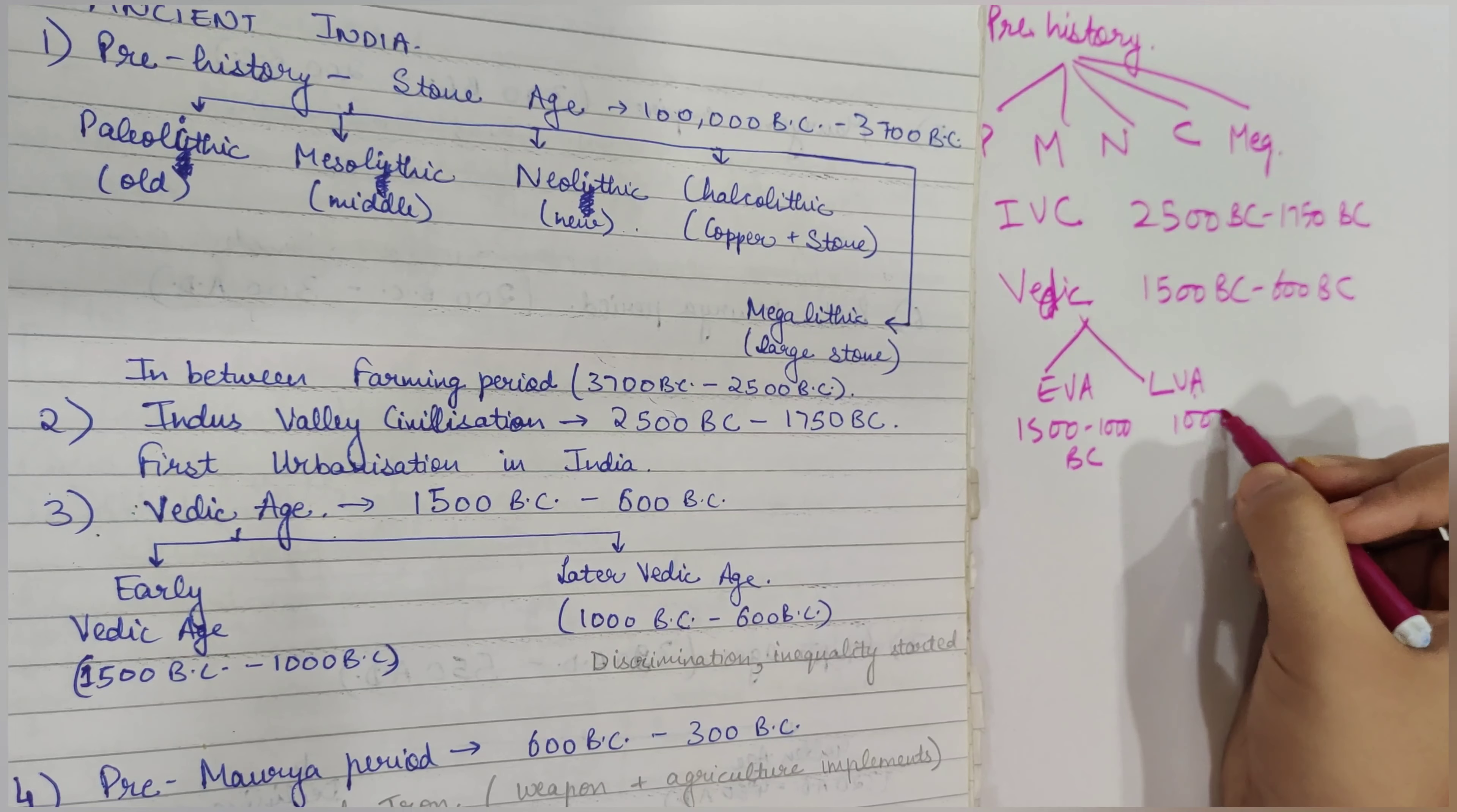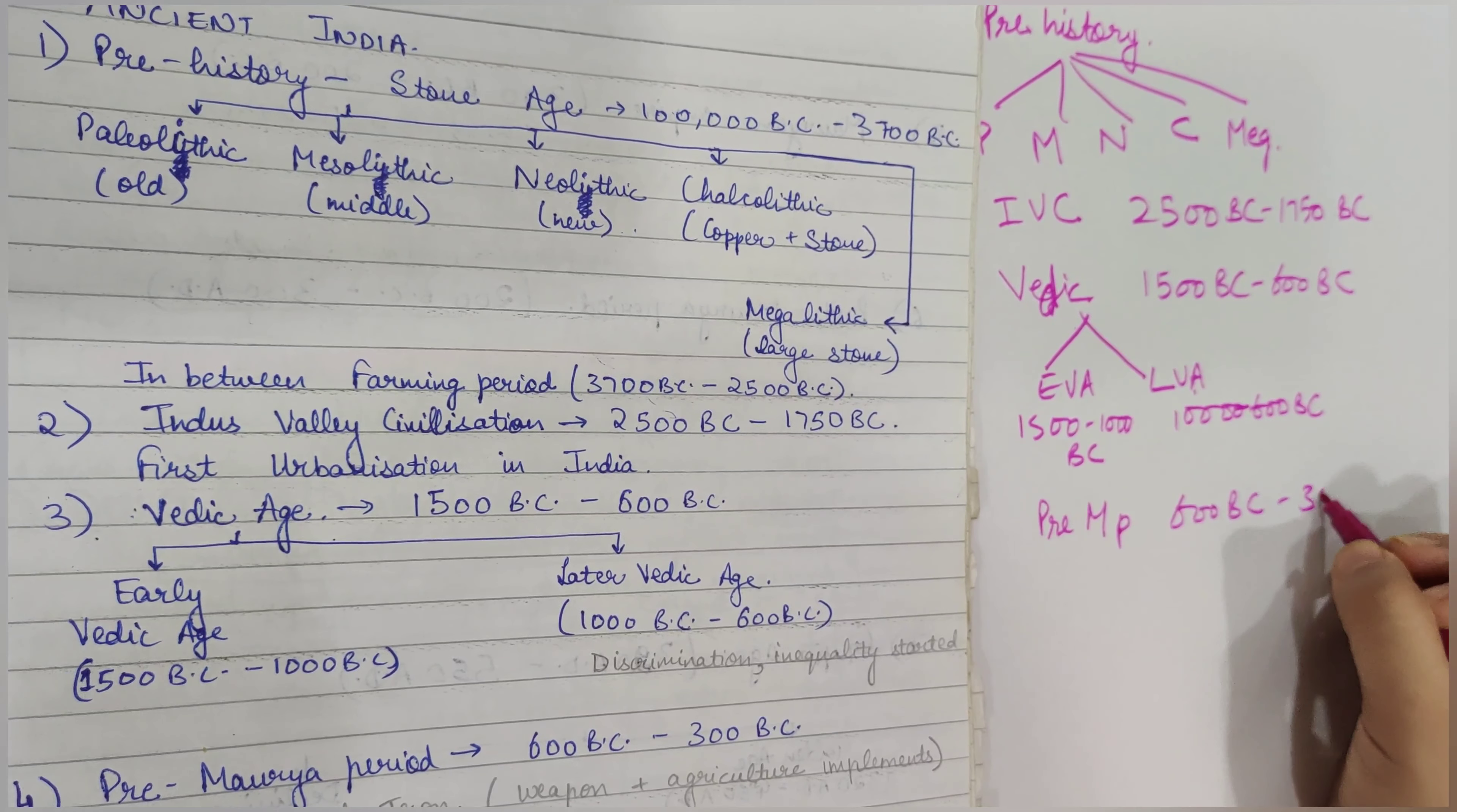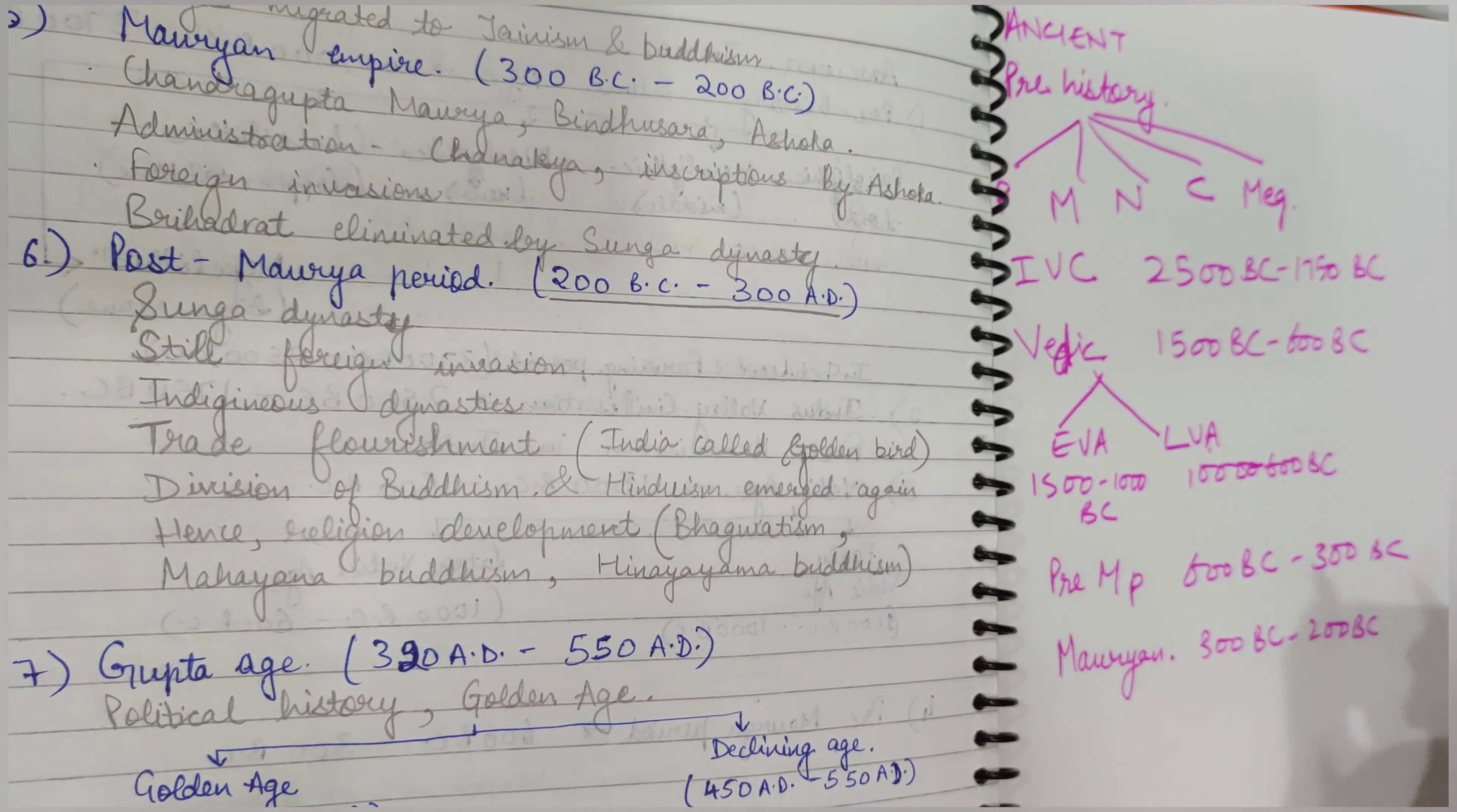After this comes the Pre-Maurya period, which lasts from 600 BC to 300 BC. Then comes the Mauryan Empire, which is from 300 BC to 200 BC.